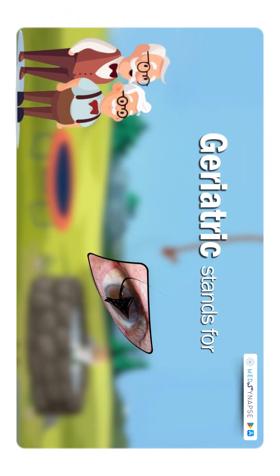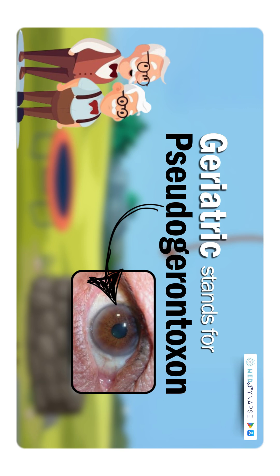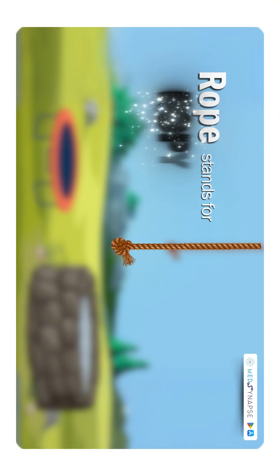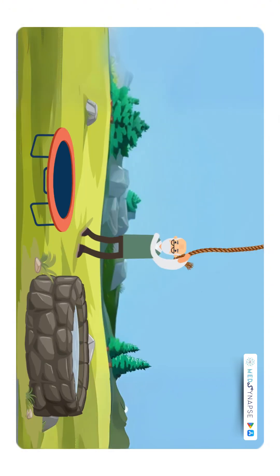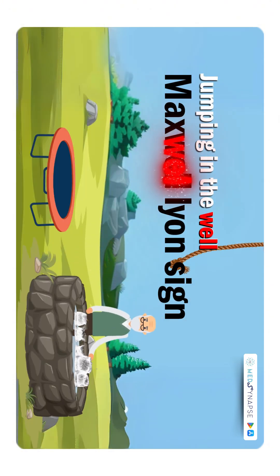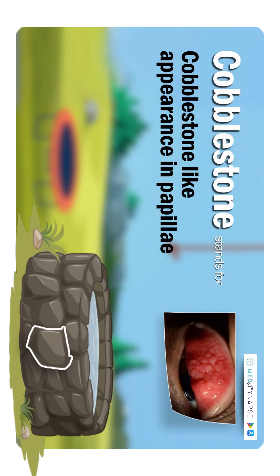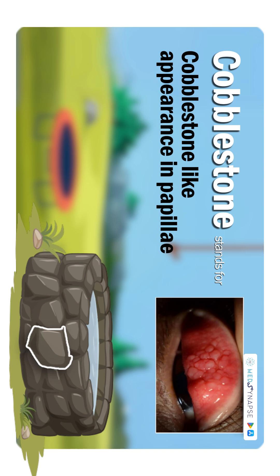Let's connect the dots. Geriatric stands for pseudo gerontoxon — an arcus senilis-like thing which can occur in children. Trampoline stands for Horner-Tranta spots, which are white dots that are collections of epithelial cells and eosinophils surrounding the limbus. Rope stands for the ropey discharge. Jumping in the well is the Maxwell-Leon sign. And cobblestone represents the cobblestone appearance — the papillae giving the cobblestone appearance.